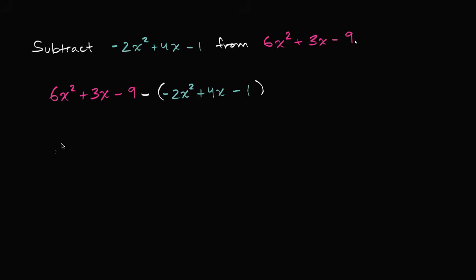Now what can we do from here? Well, we can distribute this negative sign. And then if we did that, we would get the 6x squared plus 3x minus 9 won't change. So we still have that.